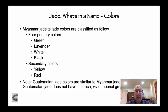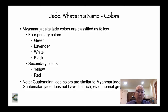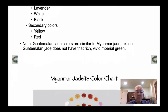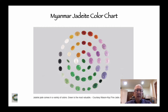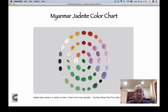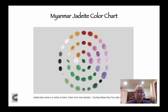Jadeite colors are divided into two groups: primary colors and secondary colors. Jadeite from Myanmar and jadeite from Guatemala are similar, but in my mind the quality is much better from Myanmar. One big difference in colors is that Guatemalan jade does not have that rich, vivid imperial green. This color chart put together by Mason and Kay — a jewelry firm in Washington State — gives a full kaleidoscope of jade colors: lavender, the full range of green, red, yellow, white, and black.